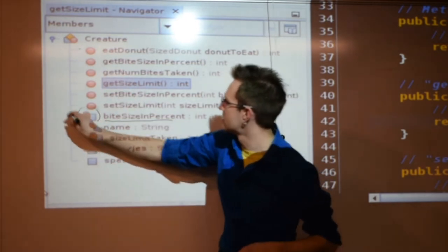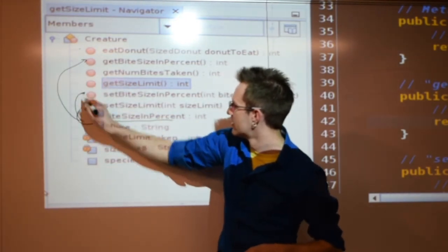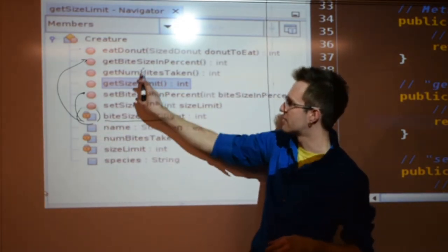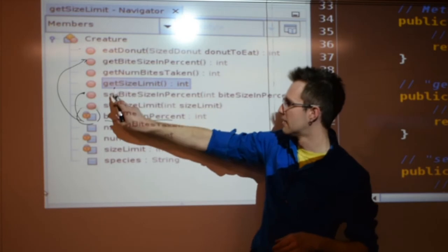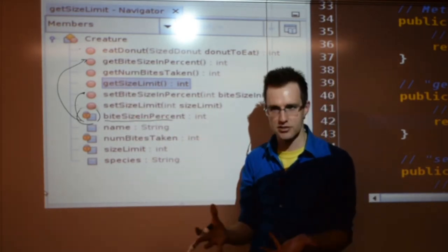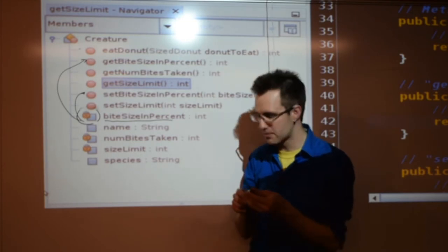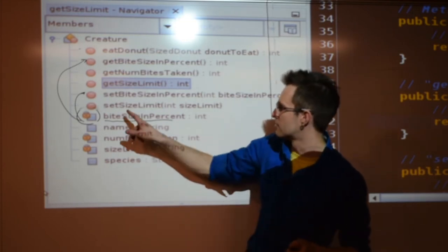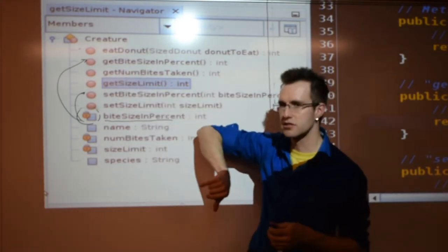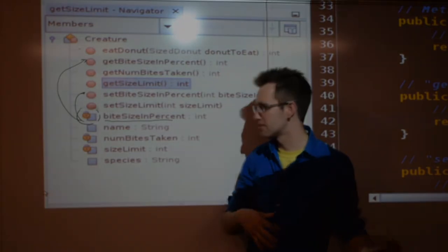So, in other words, these are paired. This member variable, bite size in percent, has two methods. One for retrieving the data, and one for putting the data in, like setting up your little magic creature. So, our next step here is to write the guts for these methods that are going to influence how we set up our creature. And we're going to make the creature and then feed him a donut. So, let's continue with this.